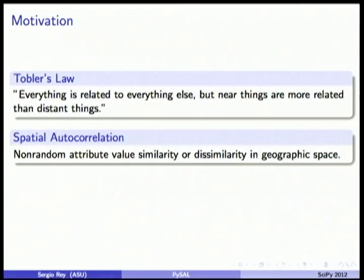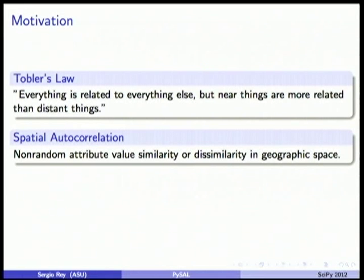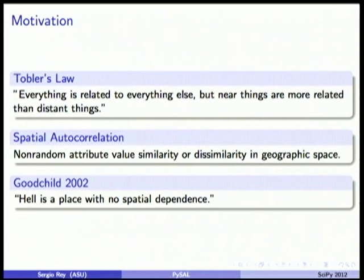It's really the embodiment of this concept of spatial correlation, which is non-random attribute value variation in geographic space. It combines notions of value similarity or dissimilarity and spatial nearness. This is a fundamental piece of why we're doing PySAL, but it's also a fundamental part of our existence as humans.